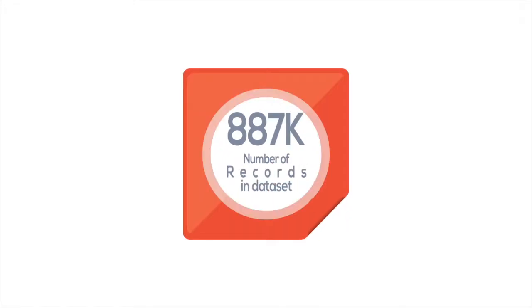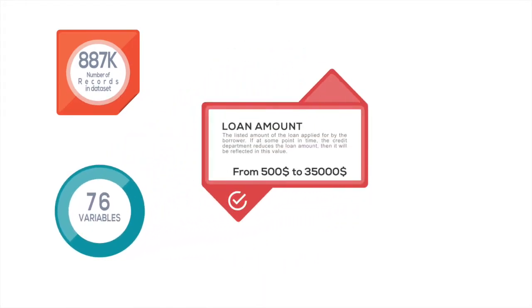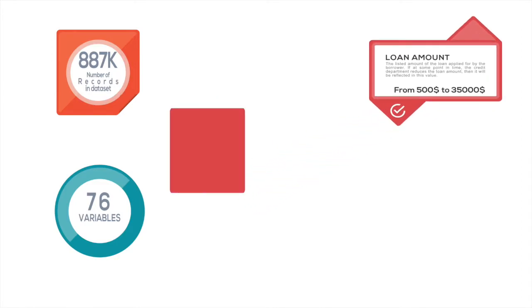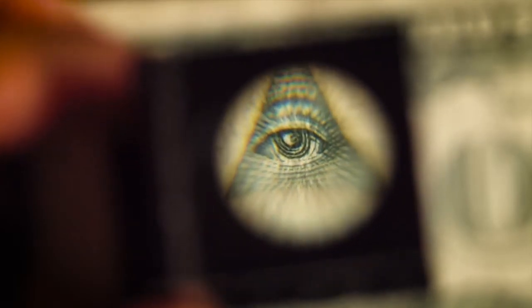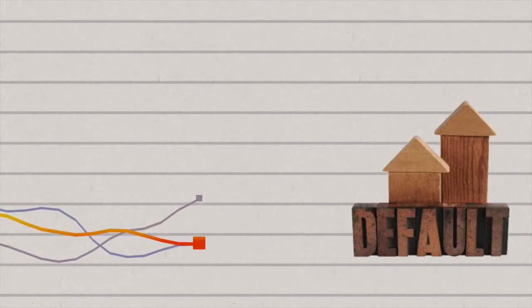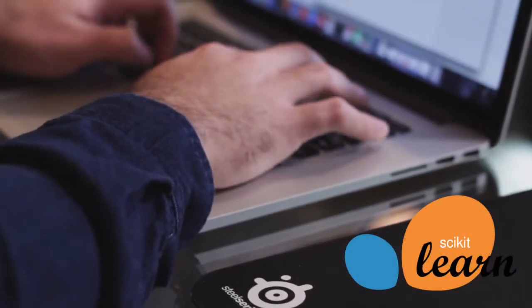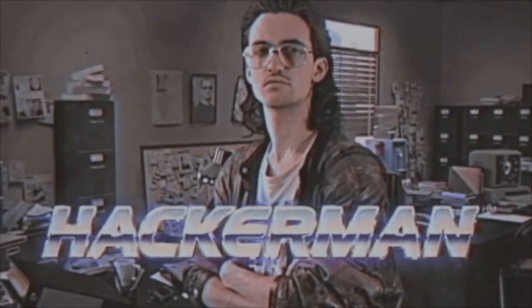The LendingClub dataset consists of a whopping 887,379 entries and 76 columns data frame. Each record represents a detailed breakdown of a loan, including variables like loan amount, issue date, loan type, and others. The goal of this dataset is to train a model that would be able to better understand consumer behavior and predict whether a customer will default on their loan. To figure out this issue, we will use the scikit-learn toolbox to pre-process, model, and classify this problem.